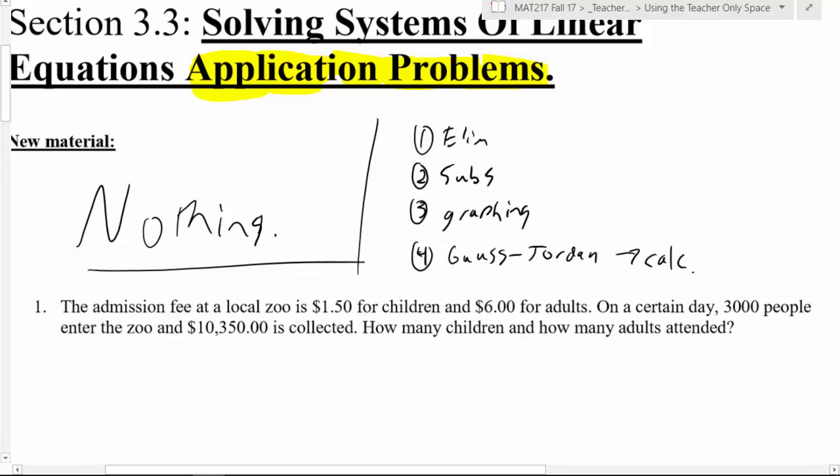If you want, if you feel confident, pause the video, give it a shot. Here we are. The admission fee at a local zoo was $1.50 for children and $6.00 for adults. On a certain day, 3,000 people enter the zoo and $10,350 is collected. How many children and how many adults attended?